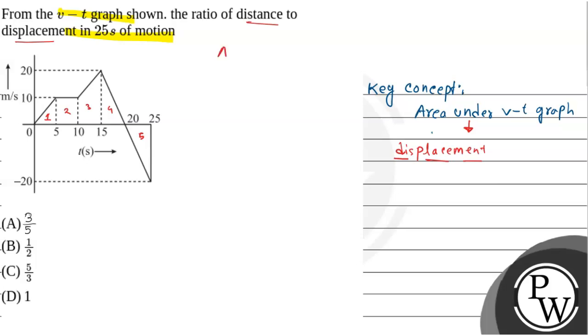Area 1, the triangle, is half into 5 into 10, that equals 25. Area 2 equals 5 into 10. This is a rectangle, so this equals 50.